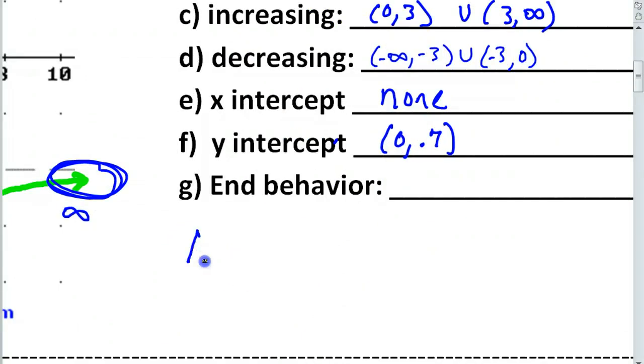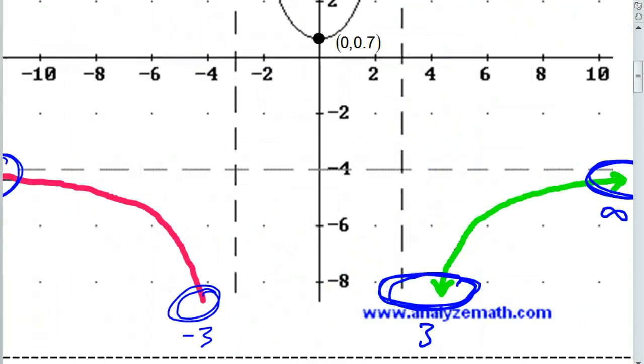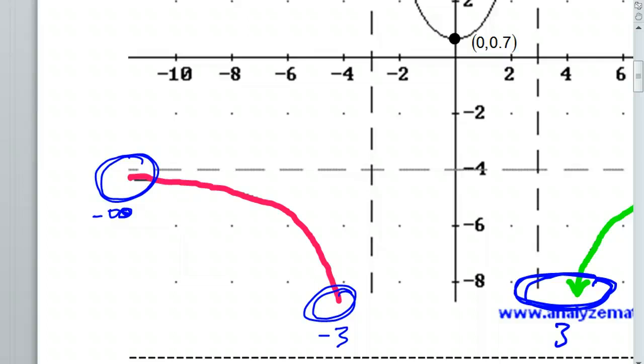All right. It's time for end behavior. So, that's going to always be like this. As x approaches negative infinity. All right. That means as we go to the left, we're going to see what happens. And then, as x approaches positive infinity, we're going to see what happens to the function. So, here, we're looking for y values now. So is it rising? Is it falling? Is there a horizontal asymptote? So, first, as we go to the left. Well, as we go to the left, the graph is approaching this asymptote. So, what are we approaching?